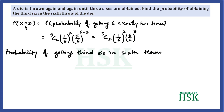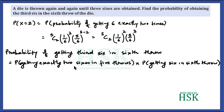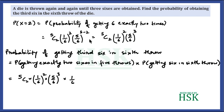The probability of getting the third six in the sixth throw equals the probability of getting exactly two sixes in the first five throws, multiplied by the probability of getting a six in the sixth throw. The probability of getting a six in any single throw is 1/6, so the sixth throw also contributes a factor of 1/6. We therefore compute the product of these two values.